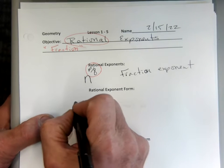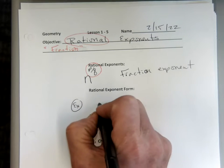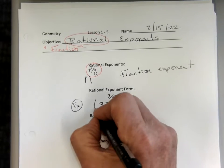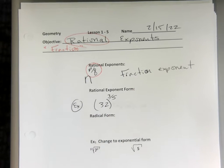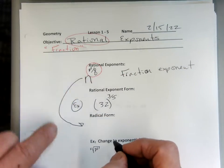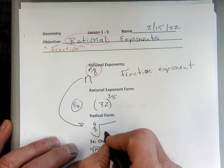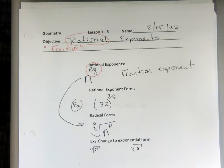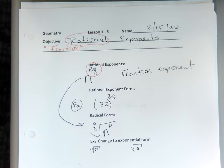An example of that could be 32 to the 3/5 power. What we want to know is that n to the p/q can be rewritten as the q-th root of n to the p power. Pay attention — it's really easy. The bottom part of the fraction becomes the root, and the top number becomes the power.